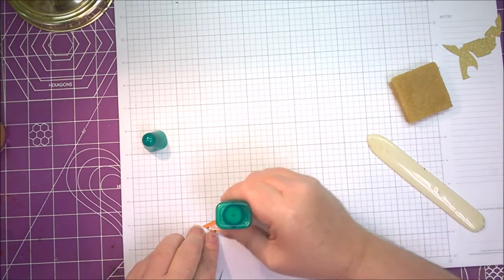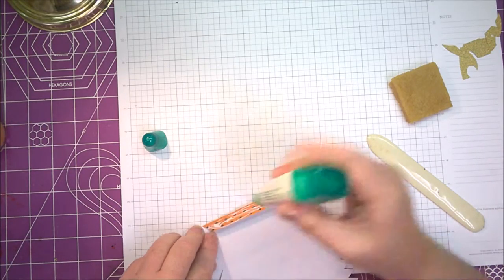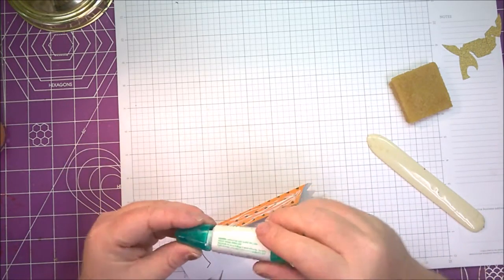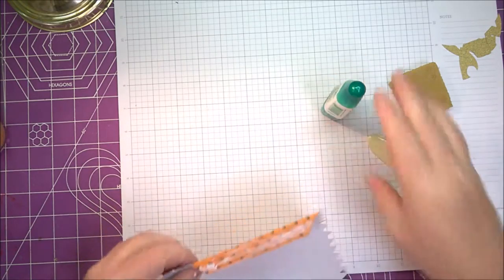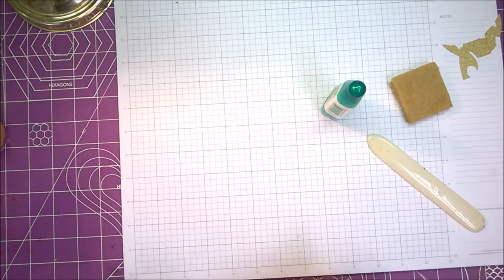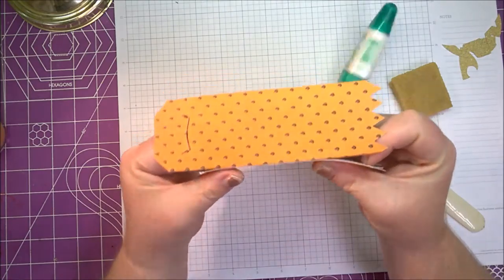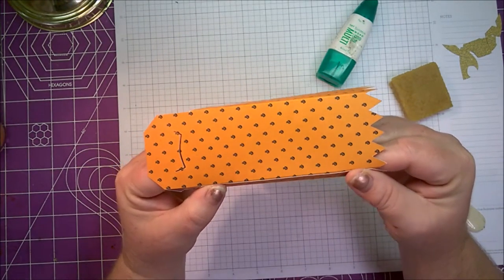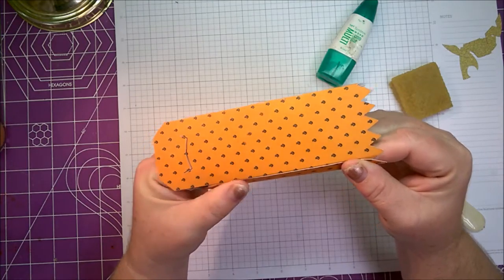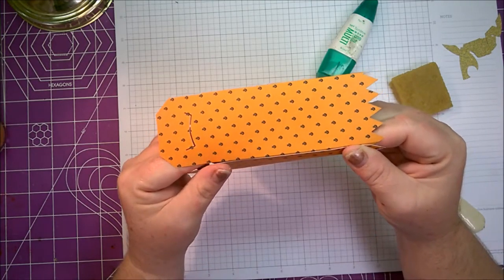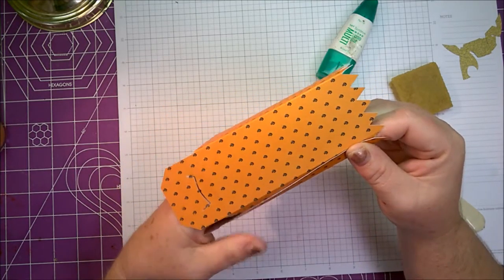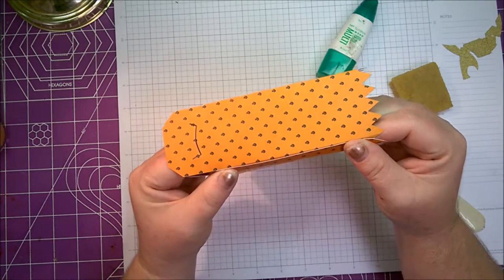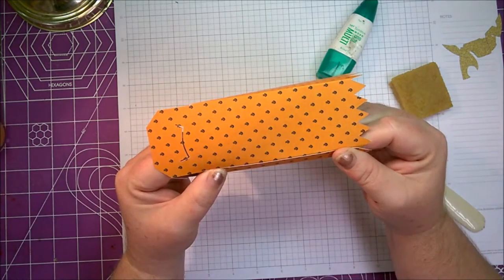Glue's supposed to go on this side, on the tab, and then carefully line up these edges.